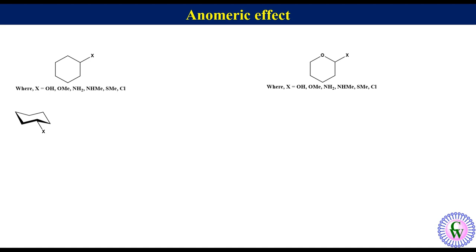Ring flipping can generate a less stable conformation that has the substituent at the axial position. The main reason for the less stability of the chair conformation with axial substituent is 1,3-diaxial interaction with the axial hydrogens making a 1,3 relation with the substituent.